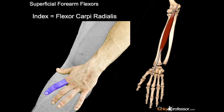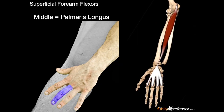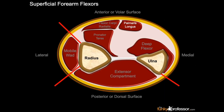The index finger represents flexor carpi radialis, which flexes and abducts the hand at the wrist joint. The middle finger equates to the palmaris longus. The palmaris longus flexes the hand at the wrist, tightens the palmar aponeurosis, and is absent in one out of fifteen people. In cross section, the palmaris longus is a superficial structure.